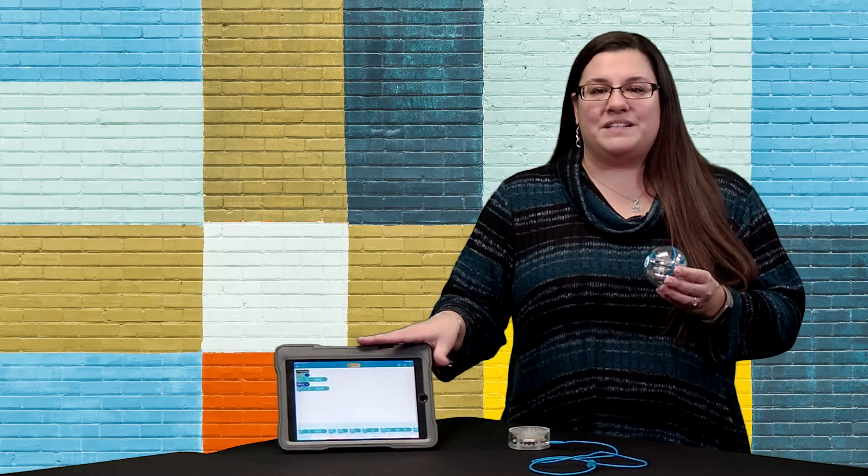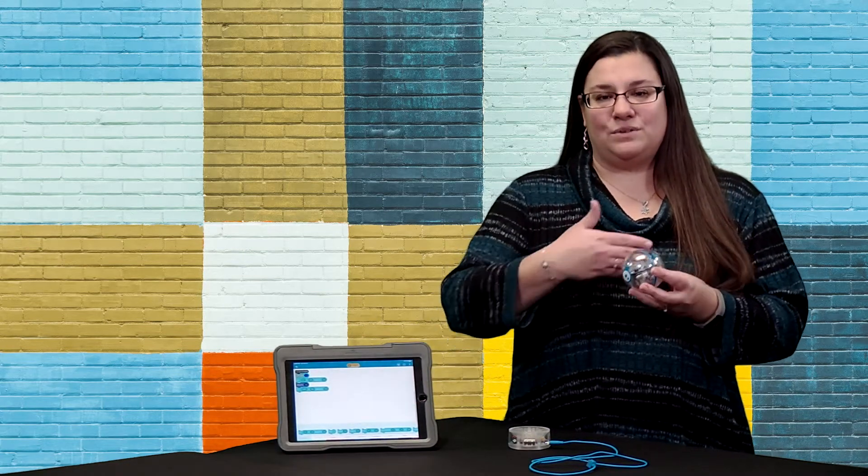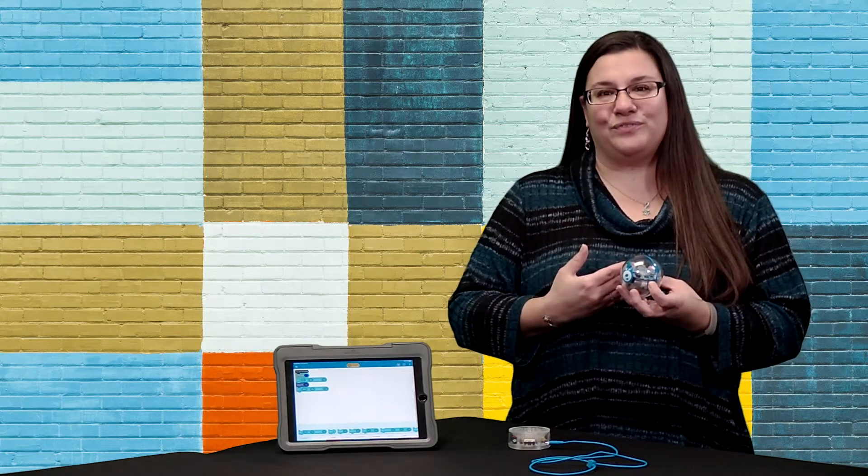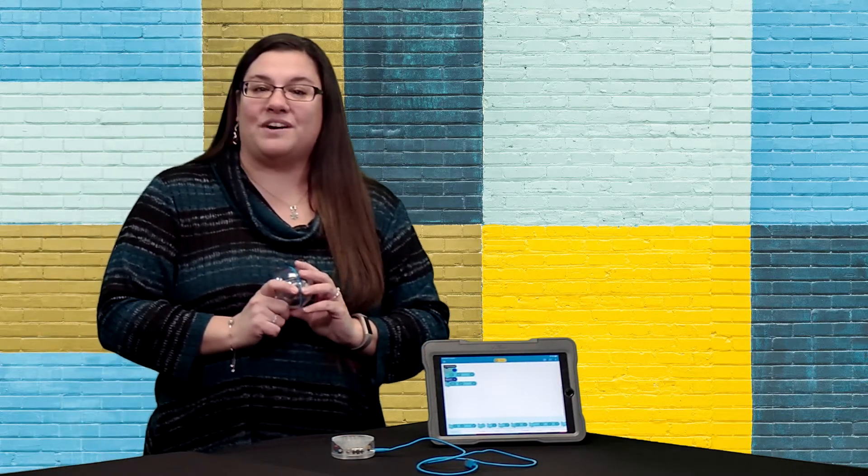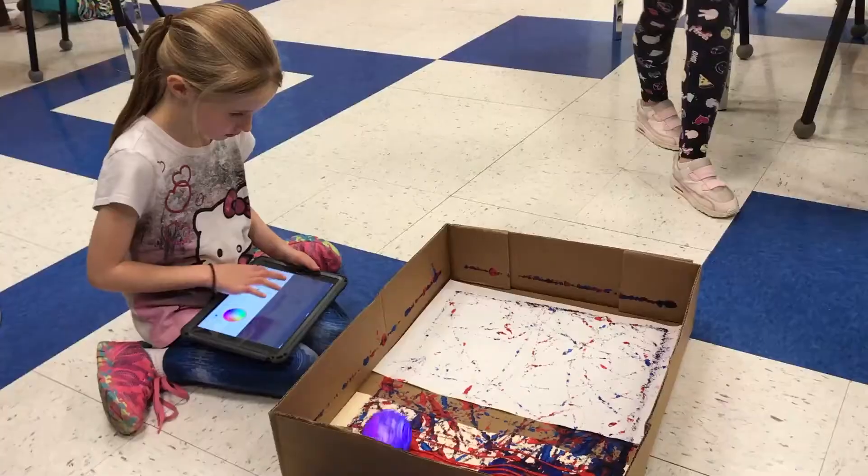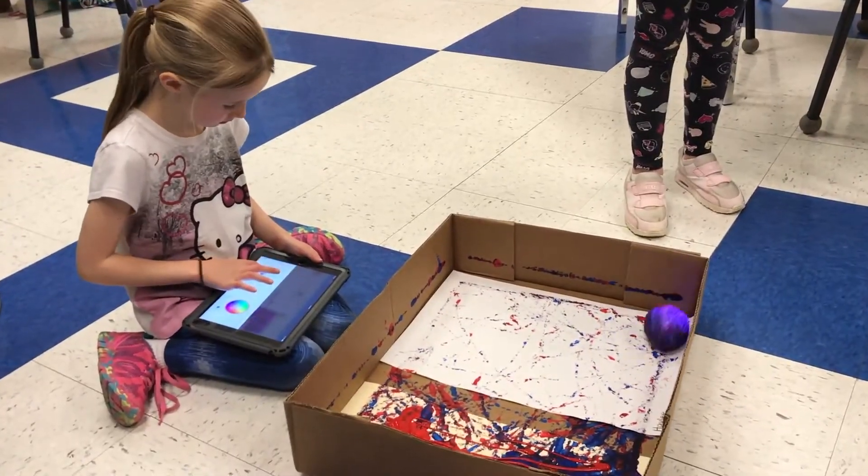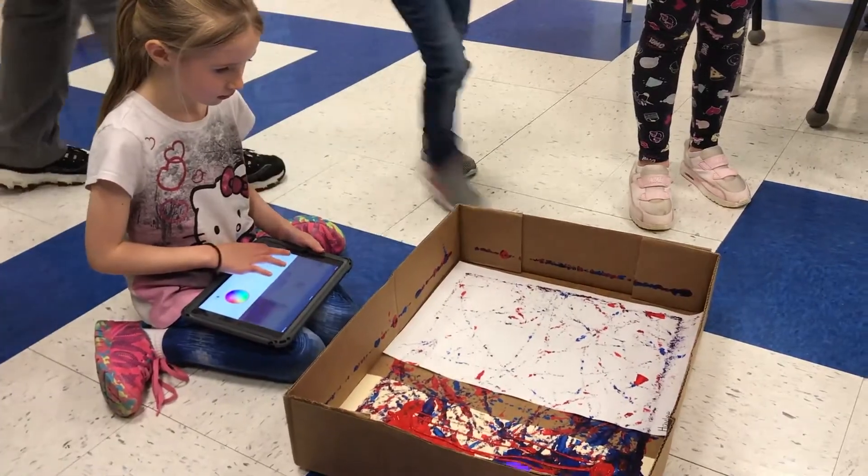One feature that makes this robot unique is the enclosed shell that makes it waterproof. So now we want to talk about how these little guys can be leveraged in your classroom. The first thing I want to talk about is that unique waterproof feature. This ability allows students to get creative and roll Sphero through paint to design a colorful masterpiece.